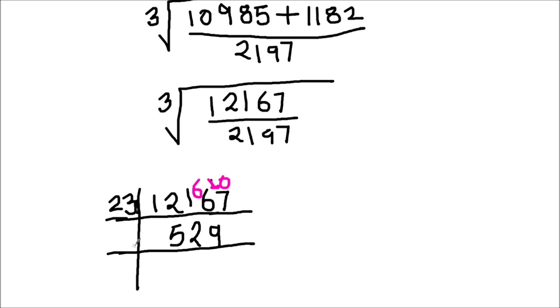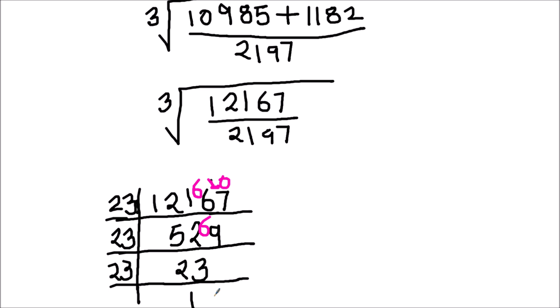Now we have 529, which is also divisible by 23. 23 times 2 is 46, and 6 will be the remainder here. This becomes 69, and 23 times 3 is 69. Now 23 is a prime number, it is only divisible by 23. 23 times 1 is 23. So we have the factors of 12167 as 23 times 23 times 23.